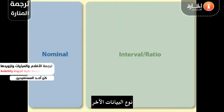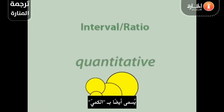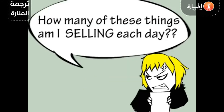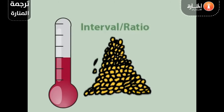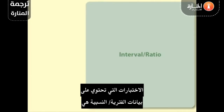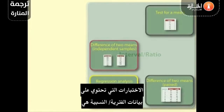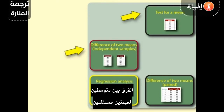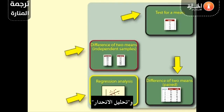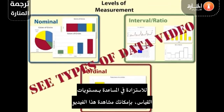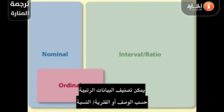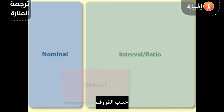The other type of data is interval ratio, also called quantitative. Examples of interval ratio data are daily sales figures for choc-a-nutties, weight of peanuts or temperature. The most common summary value for interval ratio data is a mean. Tests that involve interval ratio data are test for a mean, difference of two means independent samples, difference of two means paired, and regression analysis. For more help on levels of measurement, see our video on types of data: nominal, ordinal, interval, ratio. Ordinal data can be classified with nominal or interval ratio depending on the circumstances.